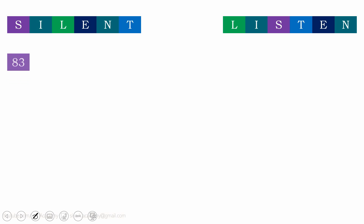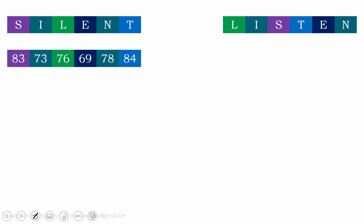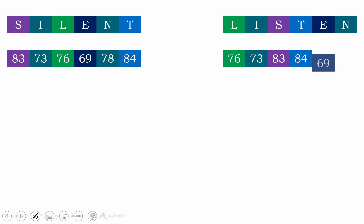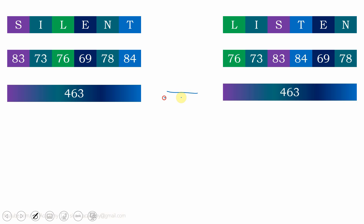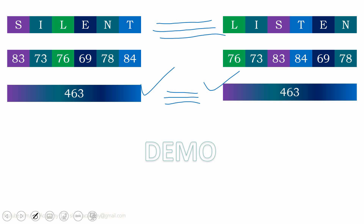Now let me show you how to use ASCII values to check whether two strings are anagram of each other. Let us take the two strings again — 'silent' and 'listen'. I'm going to find the ASCII value of each character in the string. For example, the ASCII value of 's' is 83, 'i' is 73, and similarly we take the ASCII values of other characters. For 'listen' also, we take the ASCII value of each character. Once we have the ASCII values, we take the summation for both strings. If the summations are equal, then 'silent' and 'listen' are said to be anagram of each other.